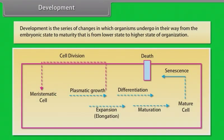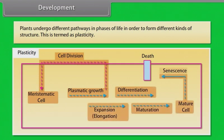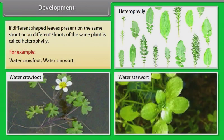Development. Development is the series of changes in which organisms undergo in their way from the embryonic state to maturity, that is, from lower state to higher state of organization. Plants undergo different pathways and phases of life in order to form different kinds of structure. This is termed as plasticity. If different shape leaves present on the same shoot or on different shoots of the same plant, it is called heterophylly. For example, water crowfoot and water starwort.